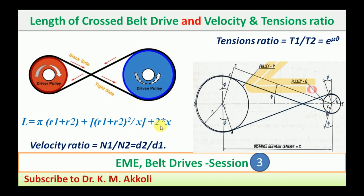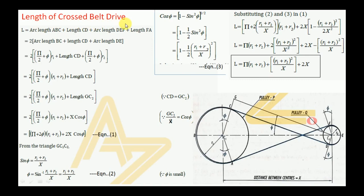The length is given directly and later we will discuss the derivation. The velocity ratio and tension ratio are also given. For the derivation of the length of the cross belt drive, we need to consider the driver pulley having radius r1, the driven pulley having radius r2, and the distance between the centers of the two pulleys as x.